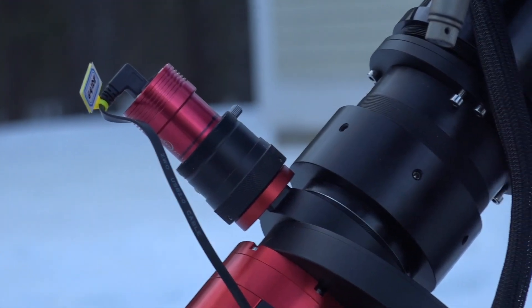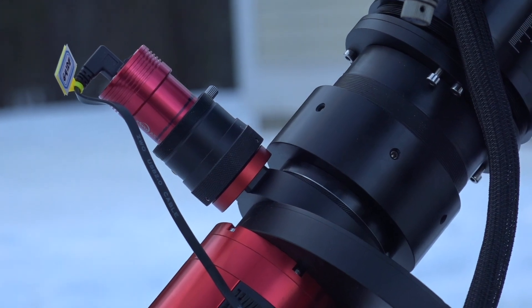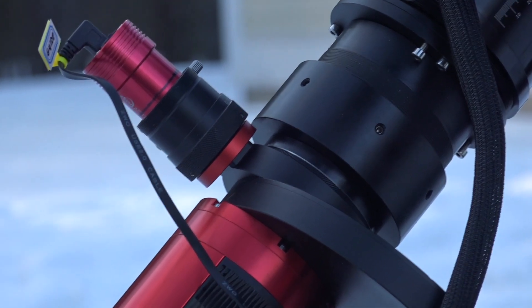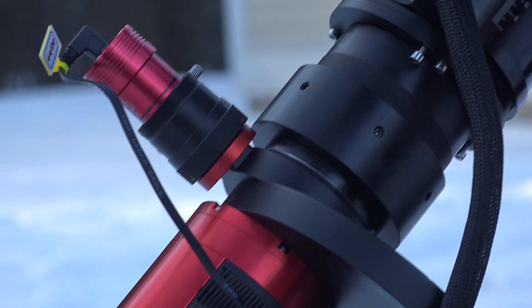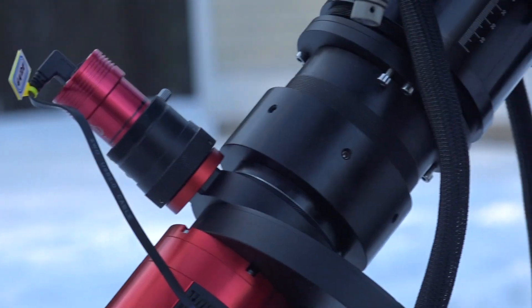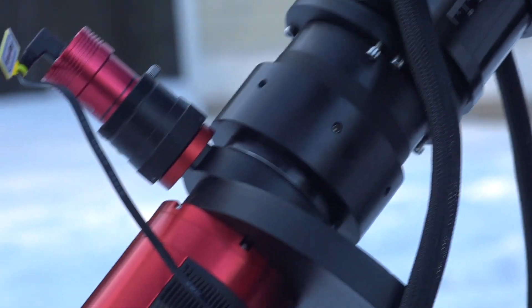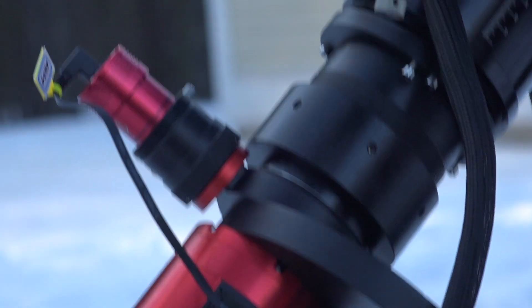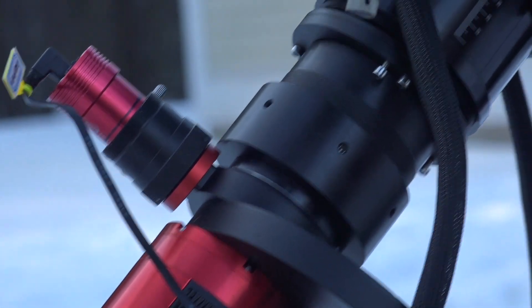I use that taken-off light to go into my guiding computer and lock on a star target. What that does is corrects the tracking of the telescope through the night.